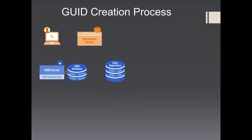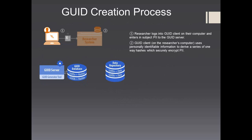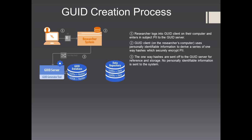The GUID creation process begins with the researcher logging into the GUID client on their computer and entering the subject PII to the GUID server. The GUID client, on the researcher's computer, uses personally identifiable information to derive a series of one-way hashes which securely encrypt PII. The one-way hashes are sent off to the GUID server for reference and storage. No personally identifiable information is sent to the system.